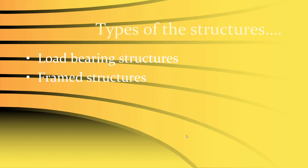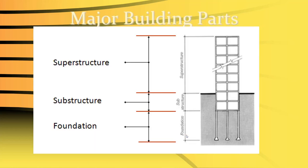In load bearing structures like castles or forts, walls have large widths because the height is more, requiring greater wall thickness. In frame structures, only the column sizes are increased or decreased as per the requirement. This flexibility allows construction of high-rise structures, which is why frame structures — including RCC and steel structures — are preferred in modern construction.